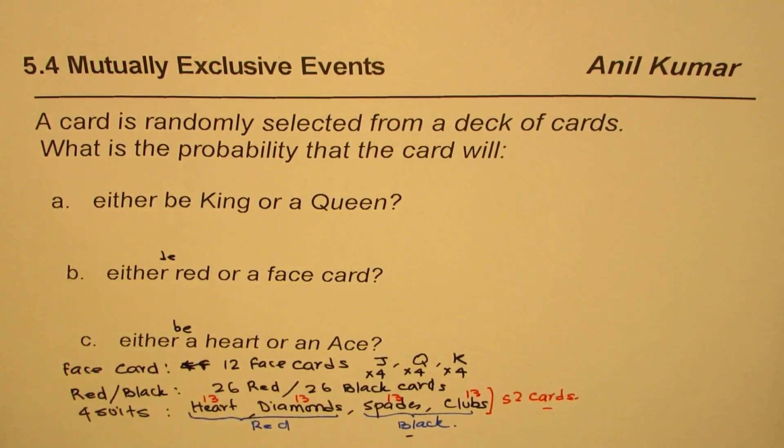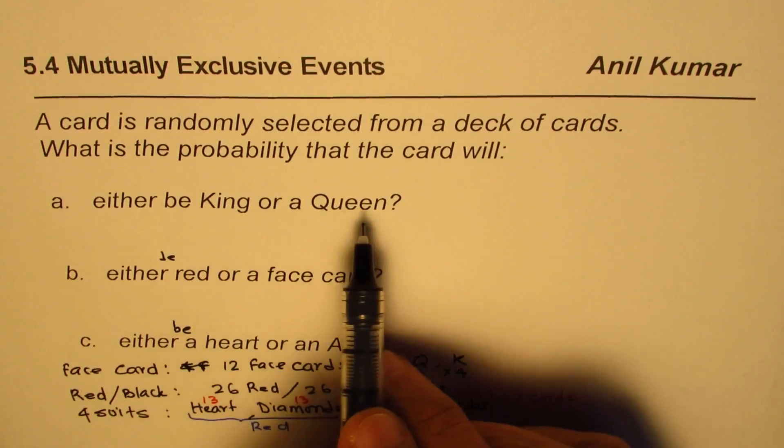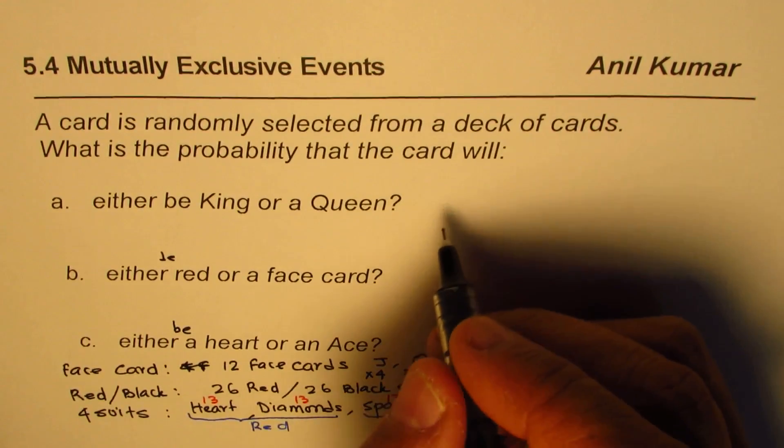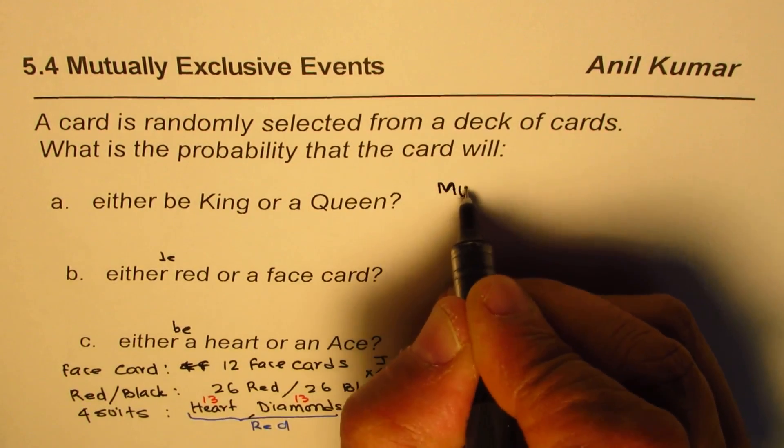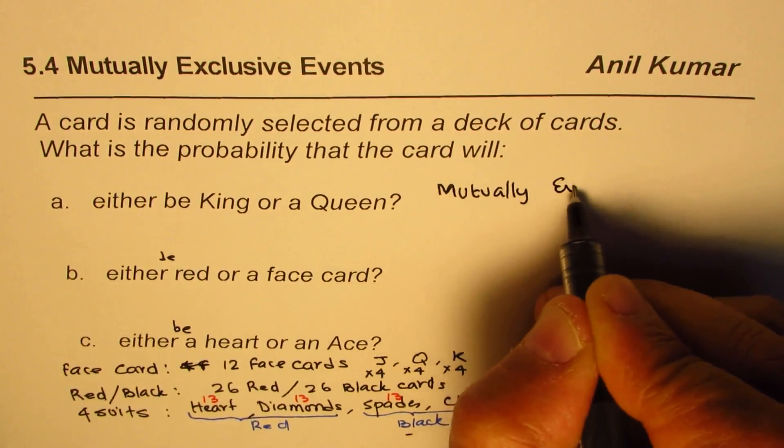Now let's answer part A: either be king or a queen. We know that if it is a king, it is not a queen, so this is mutually exclusive.